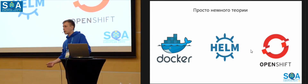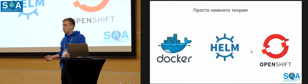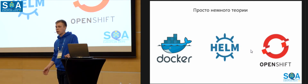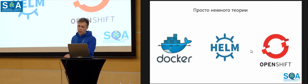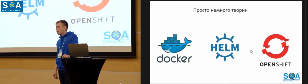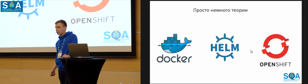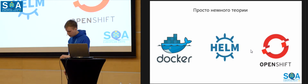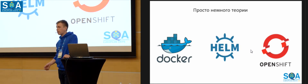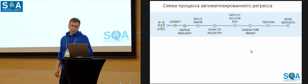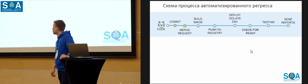A bit of theory: Docker is the containerization system, and one of its key principles has just been presented. OpenShift is a system to orchestrate Docker containers — it has the same Kubernetes underneath but with certain benefits. This tool manages our Docker containers, and Helm manages the releases. It gives us the possibility to update releases and configurations within the environment scope.